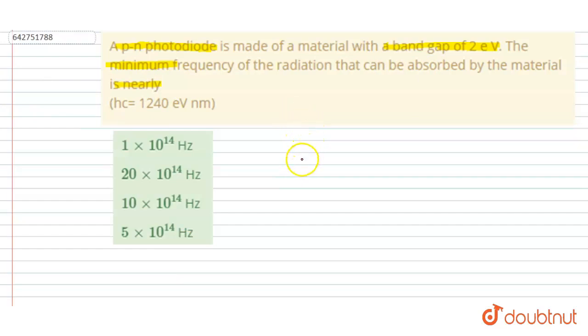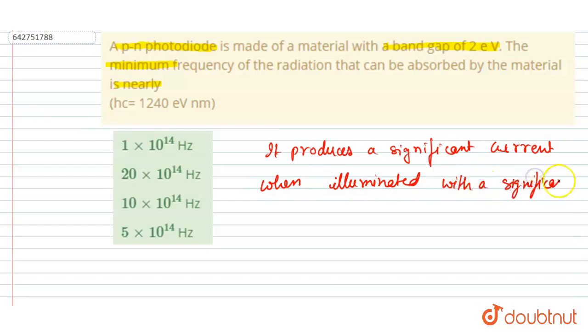This diode produces a significant current when illuminated with a significant frequency of radiation. So I will write: it produces a significant current when illuminated with a significant frequency of radiation.